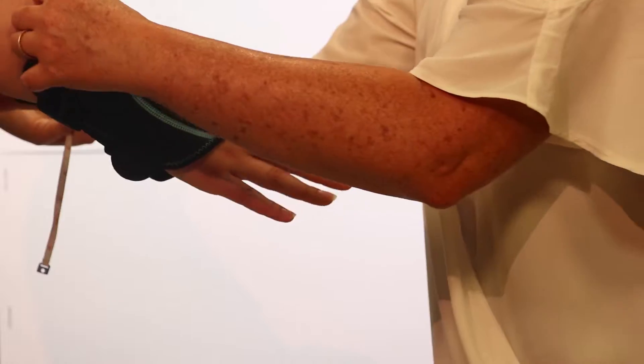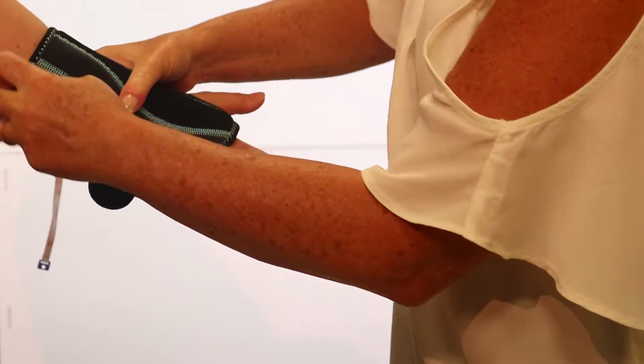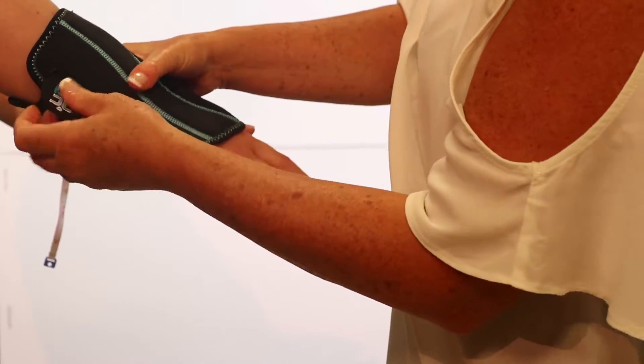To apply, slide the hand into the brace, placing the thumb in the cutout with the palm of the hand against the curved stay.